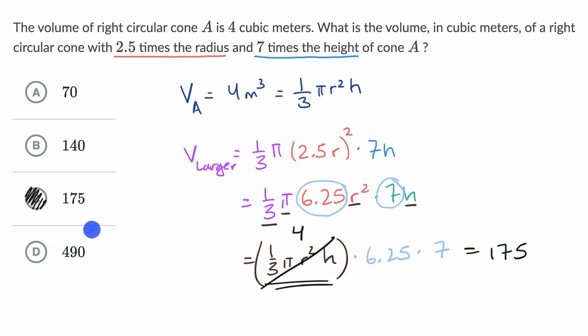Now, another way that you could have thought about this is saying, all right, my volume is based on the square of the radius and the height. So if I increase my radius by 2.5 times, that's going to increase my volume by the square of that, by 6.25 times. And if I increase my height by a factor of seven, well, I just have an H there, not an H squared, so that's going to increase my volume by a factor of seven. So overall, we're going to increase our volume by a factor of seven times 6.25. And then you multiply that times the four cubic meters and you once again get to the 175 meters cubed.